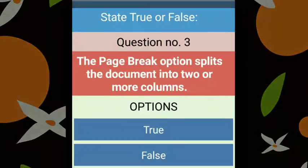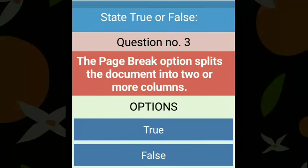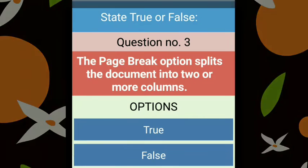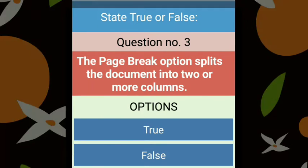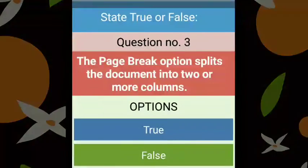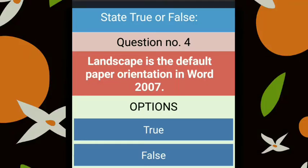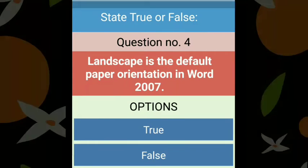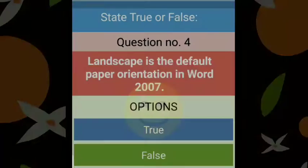True/False question: the page break option is used to divide text into columns. We have to use the Column Break option, not page break — so this is False. Question four: landscape is the default paper orientation in Word 2007. By default, our page is set to portrait mode, so this is also False.